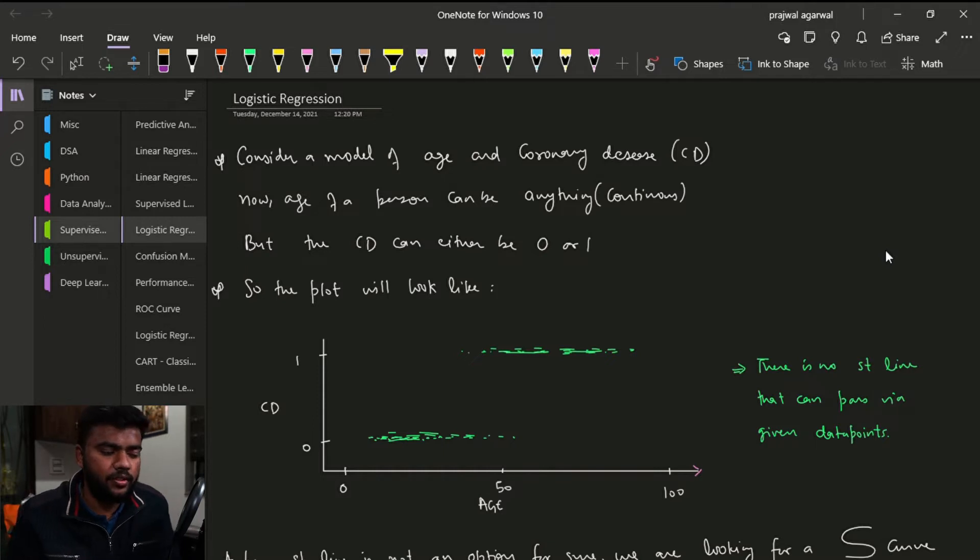Now for that we will consider this model where we have the age of a patient and then we have the possibility if they will be having a coronary disease or not. Now the age of the person can be anything—it is a numerical value, a continuous value, it can be anything from 1 to 100, considering the last person living is 100.